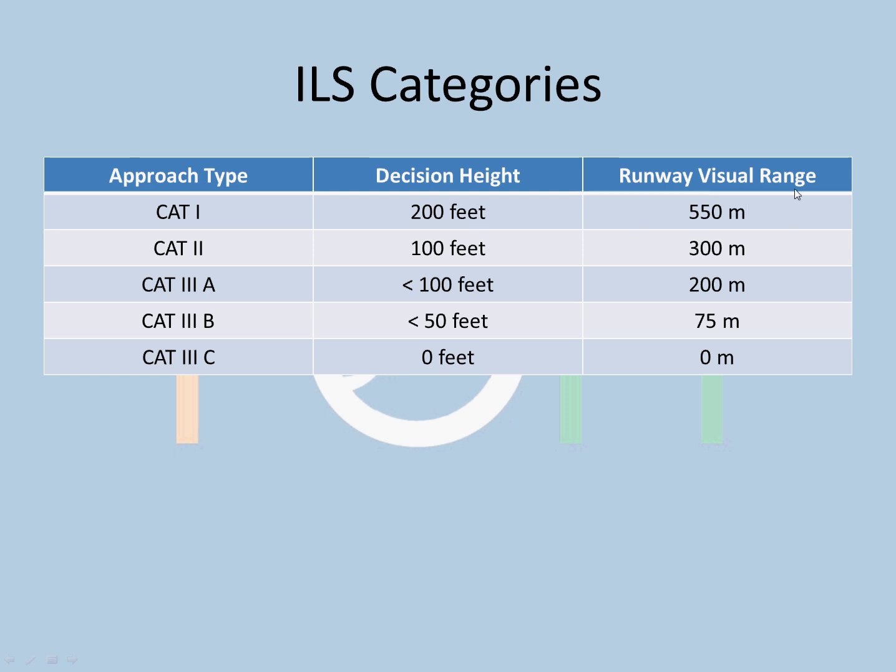Cat 2: 100 feet is the decision height, RVR should be 300 meters. Cat 3 Alpha: decision height is less than 100 feet, but RVR requirement is 200 meters.